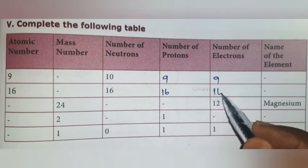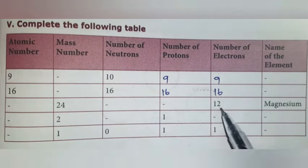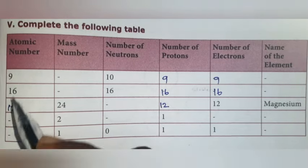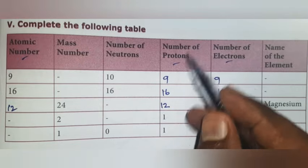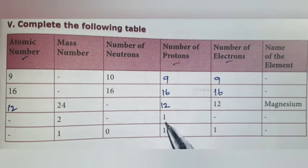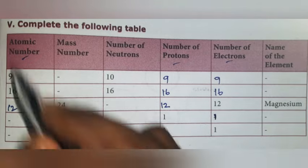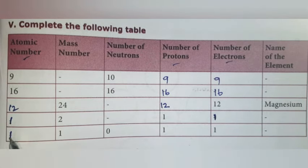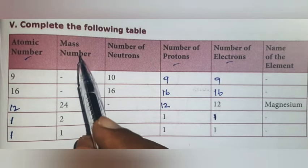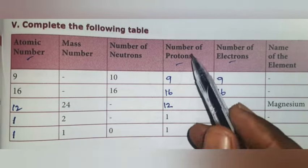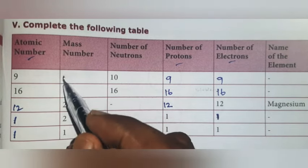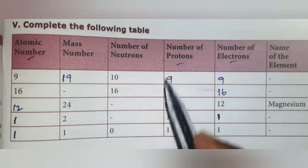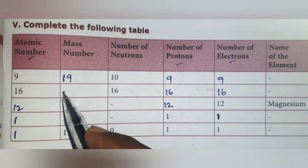If number of electrons is 12, the number of protons is also 12, and the atomic number is also 12 because these three are the same. Next, number of protons is 1, number of electrons is also 1, then atomic number is also 1. Now we'll write mass numbers. Mass number is the sum of number of neutrons and number of protons. So 10 plus 9 equals 19. Next, number of neutrons plus number of protons equals 32.